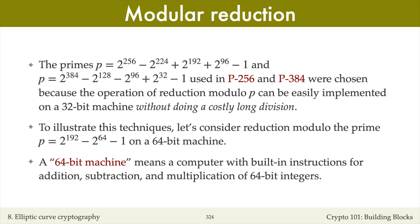Long division is inherently bit-oriented and somewhat tedious to implement in software. We would like a fast operation of reduction modulo p because elliptic curve point addition uses several modular multiplications and squarings. To illustrate this technique, consider a reduction modulo the prime p = 2^192 − 2^64 − 1 on a 64-bit machine. Note that the three exponents of 2 are multiples of 64.